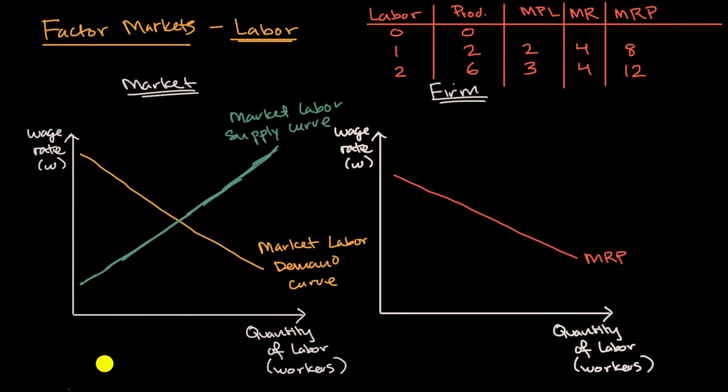And so what would be the equilibrium price of labor, which is really just the wage rate? Well, it's where your supply and demand curves intersect. And we've seen this multiple times already. So this is, I'll just call that wage star like that. And then the equilibrium quantity of labor, we could just call that Q star right over here.